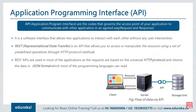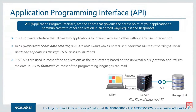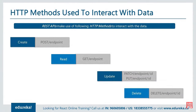What is an API? Application Programming Interface - it's the code that governs access points of an application to communicate with other applications in an agreed way. It's a software interface that allows two applications to interact with each other without any user intervention. REST (Representational State Transfer) is an API that allows you to access or manipulate resources using a set of predefined operations through HTTP protocol. Most applications use this universal protocol and return data in JSON format, which most programming languages can read. These days the most used APIs are REST APIs.